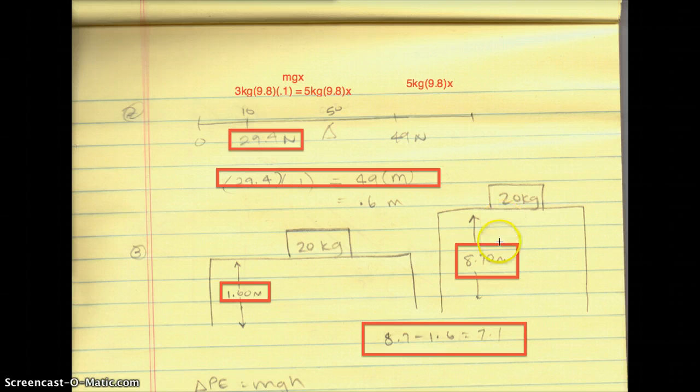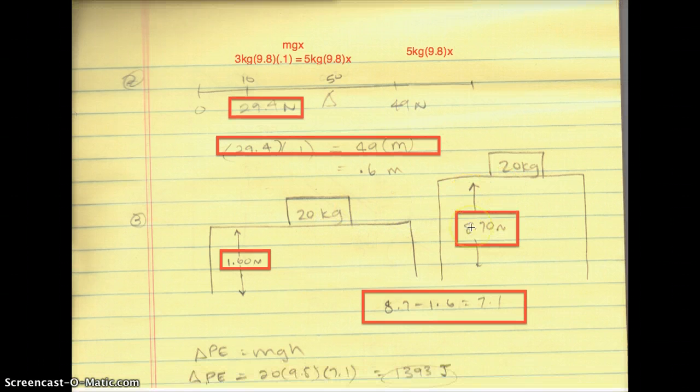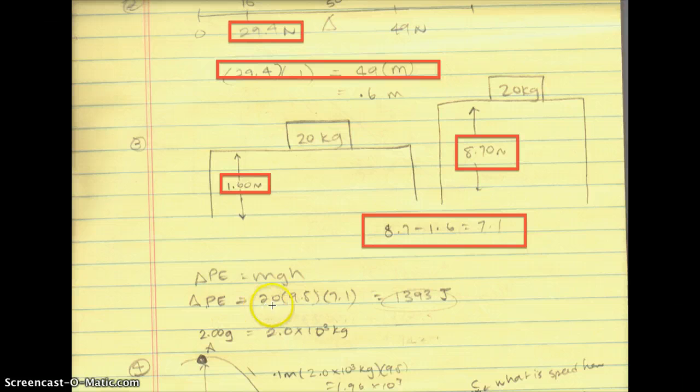Since it's the same 20 kilogram object, the mass hasn't changed. We can just plug it into our regular formula, MGH. 20 multiplied by 9.8 multiplied by 7.1 is equal to 1,393 joules.